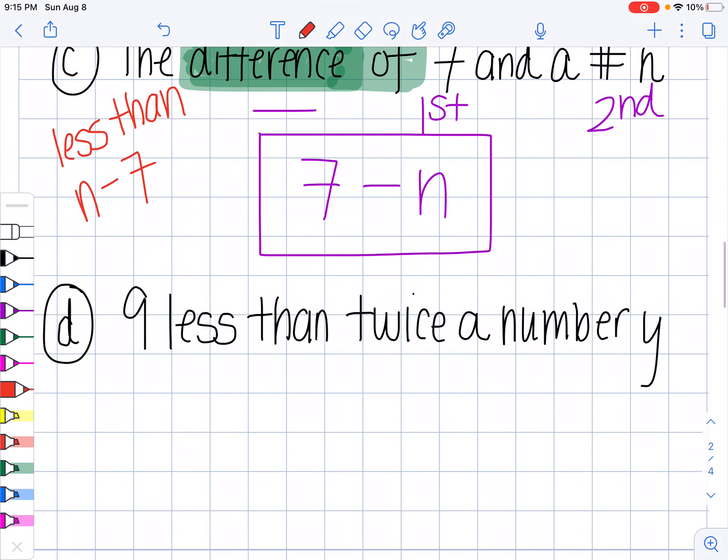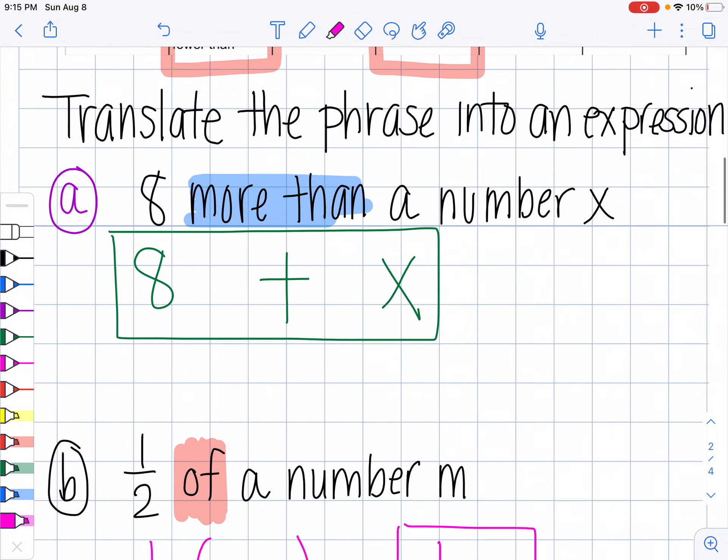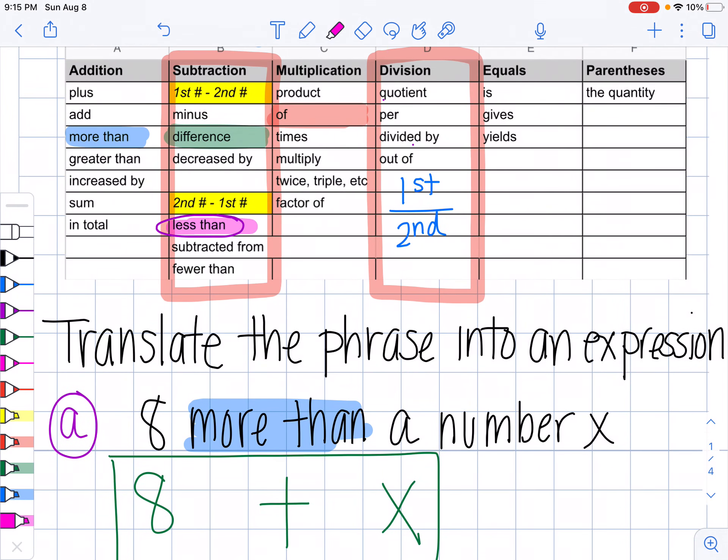Okay, and here's an example with less than. So nine less than twice a number Y. Okay, so less than we know, we just talked about it, means subtraction right up here. And this one is second number minus first number.